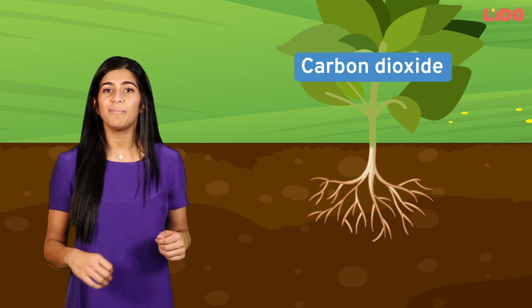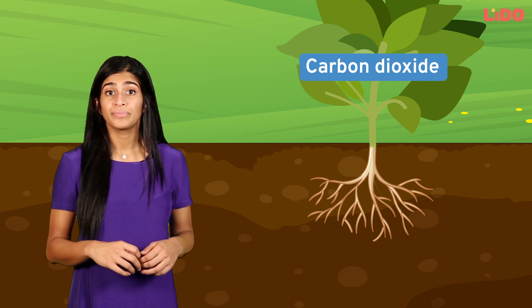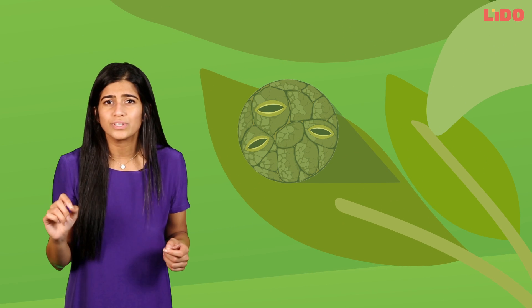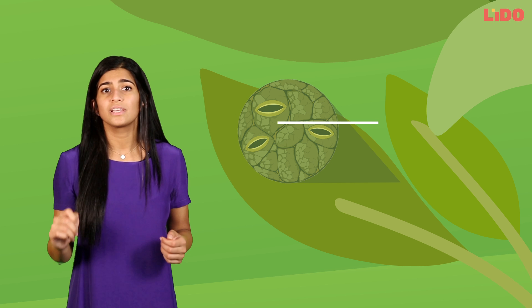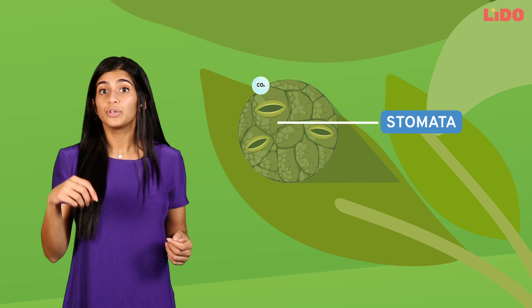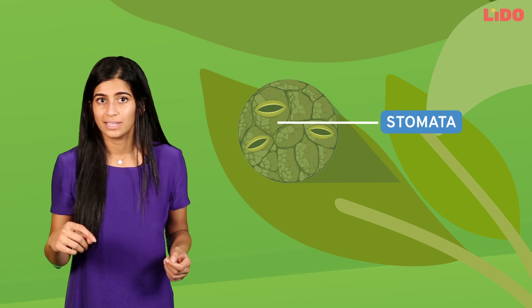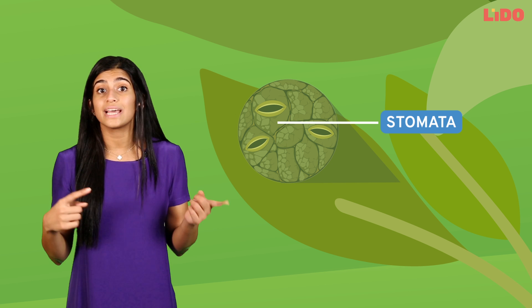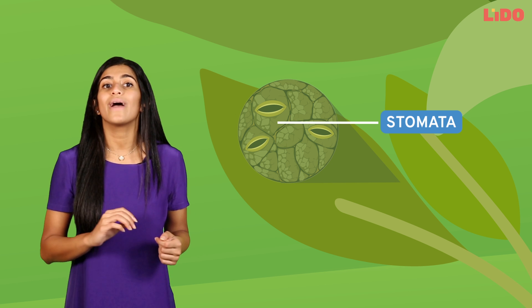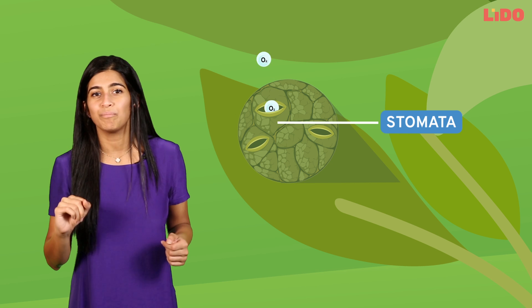Now that two of the required components have reached the leaves, we move on to the third essential component: carbon dioxide. If we zoom into a leaf, we see that it contains tiny pores on its surface called stomata. Carbon dioxide enters the leaf through these pores, and the oxygen produced as a by-product of photosynthesis also exits the leaf through these same pores.